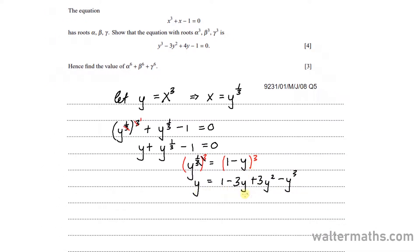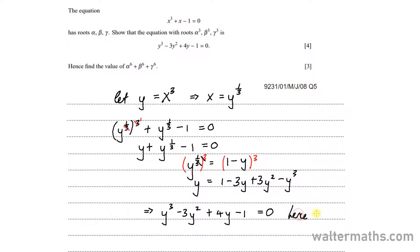So we now have it like this. I want to take everything to one side — to the left side. So eventually we form an equation: y cubed minus 3y squared, and negative 3y comes to the left adding to y, so that forms 4y, and that's minus 1 equal to 0. So that's the equation with roots alpha cubed, beta cubed, and gamma cubed. Hence shown.